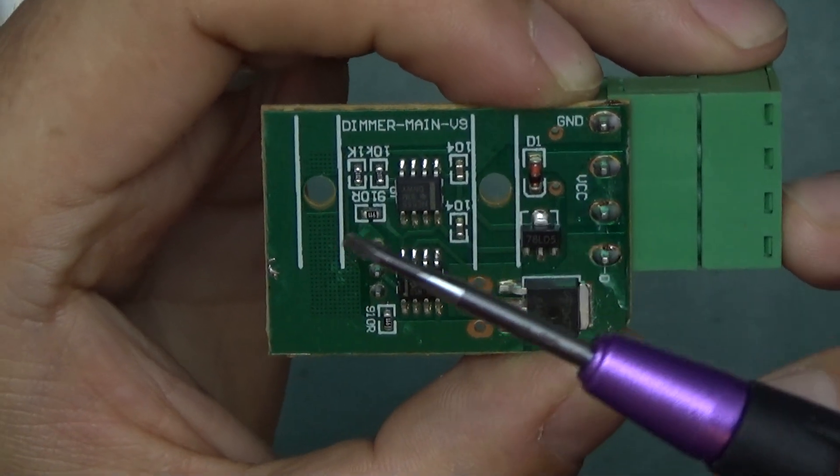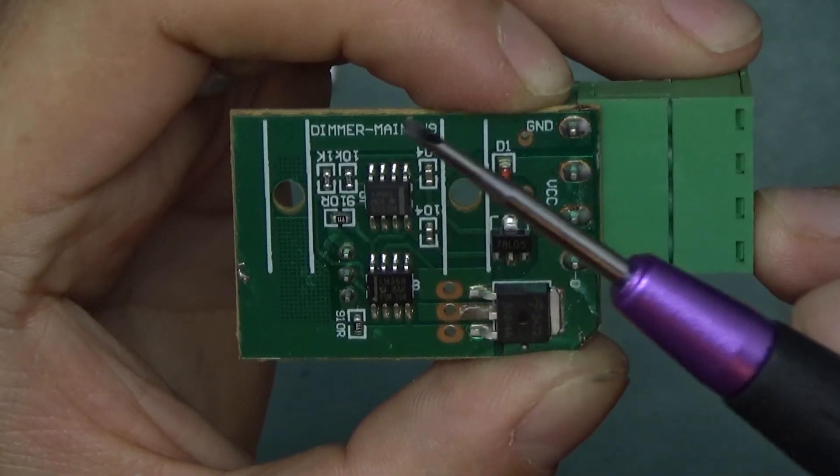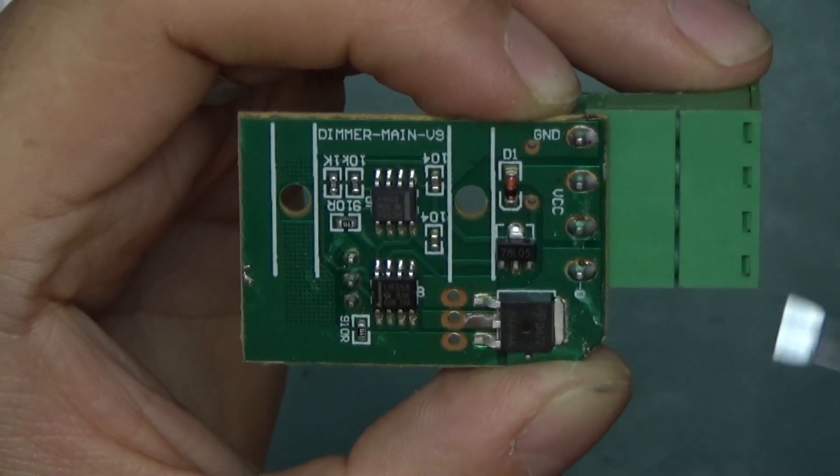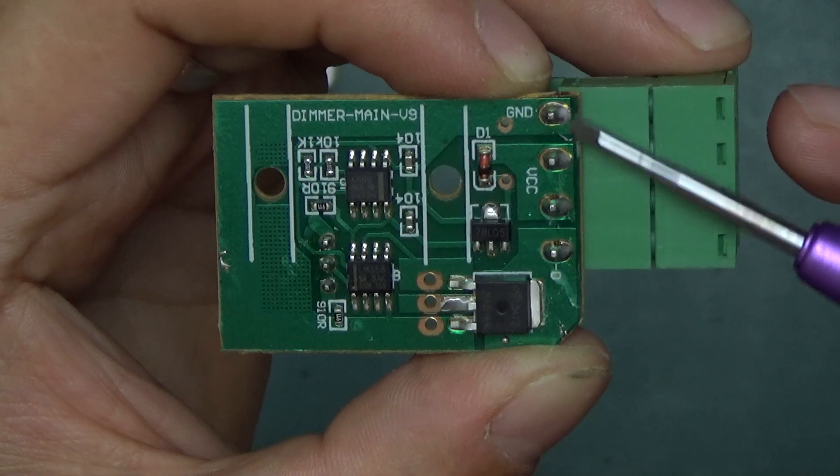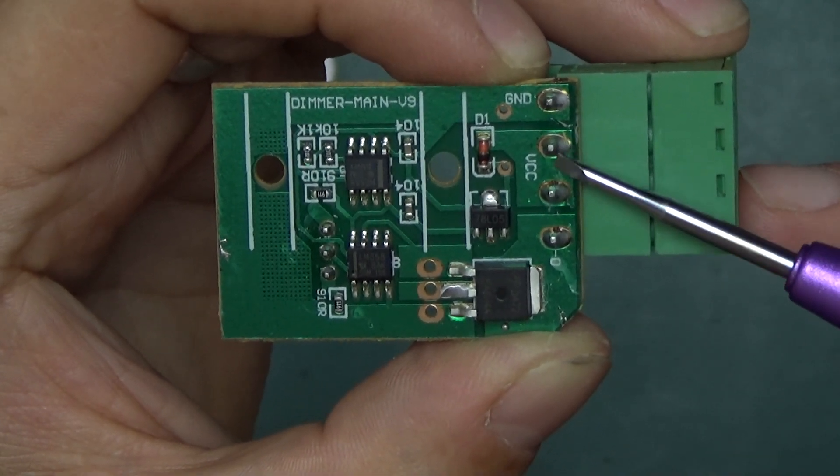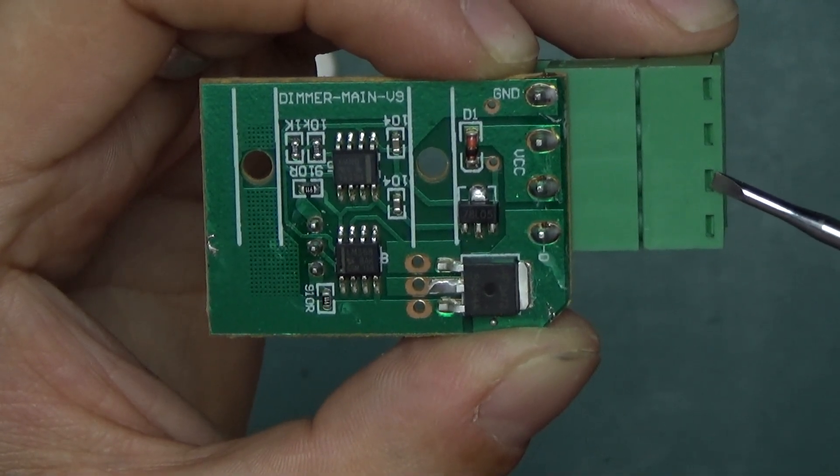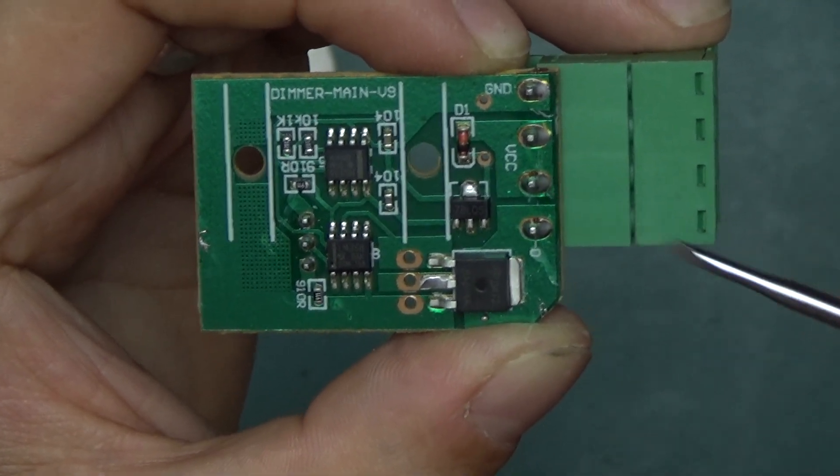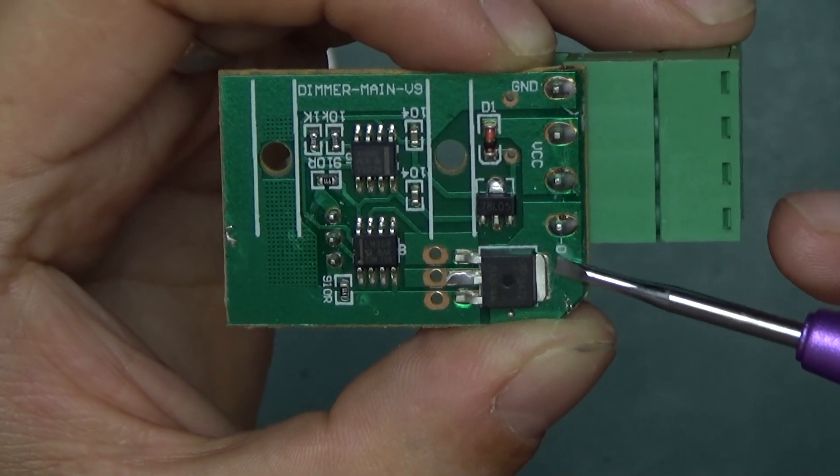The board is really nicely silkscreened with all the descriptions. Dimmer main V9, all the values are here. This side here is the input, so this is where the power goes in. Ground and positive. Now the positive is bridged straight over to the output, so the output is hot all the time. And all the switching happens on the low side.